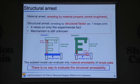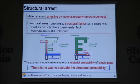By the way, there are two kinds of arrest. One is material arrest, which is governed by material property, and the other is structural arrest, which is governed by structural factors — for example, a T-shaped joint as shown in this figure. But structural arrest relies only on experimental data, so the mechanism of structural arrest is still unknown. Moreover, the existing model based on the local fracture stress criterion can evaluate only material arrestability of a simple plate, so there is no way to evaluate structural arrest.